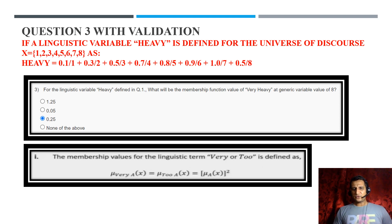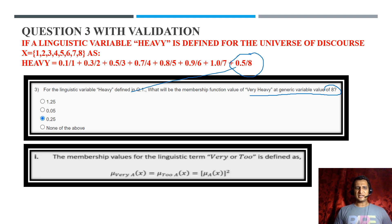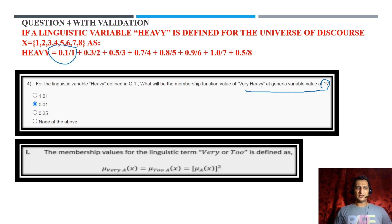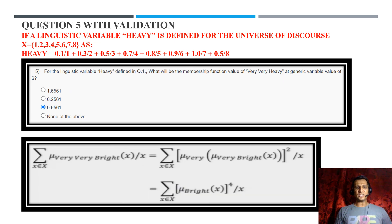Question 3: 'very heavy' at generic variable 8. Element 8 has membership value 0.5; squaring it gives 0.25, so option C is correct. Question 4: 'very heavy' at generic variable 1. Element 1 has membership value 0.1; squaring it gives 0.01, so option B is the correct answer.